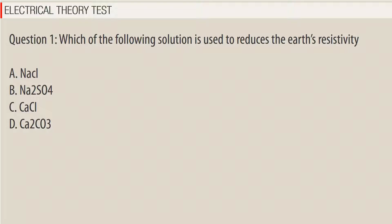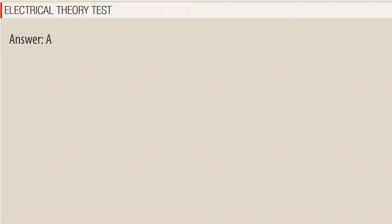Question 1: Which of the following solutions is used to reduce the earth's resistivity? A. NaCl, B. Na2SO4, C. CaCl, D. Ca2CO3. Answer: A.